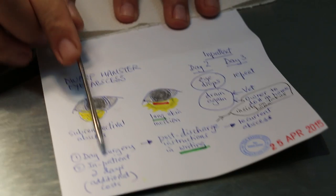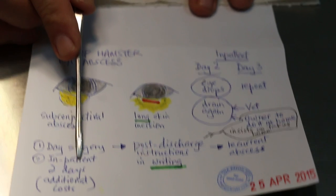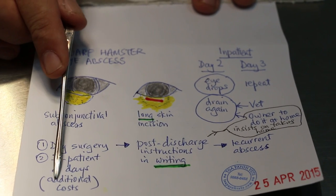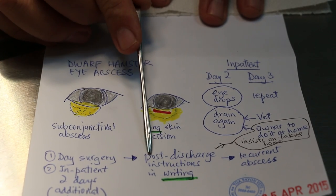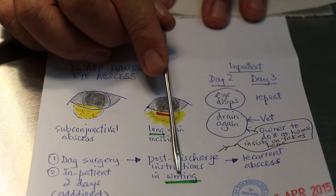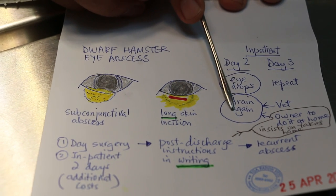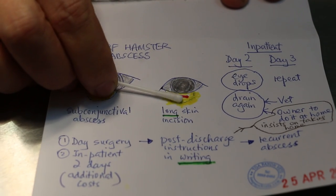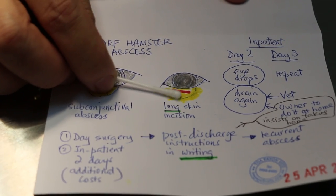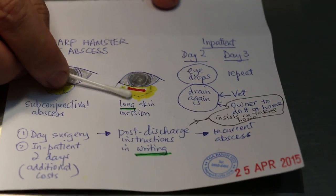I'm talking about two post-op scenarios: day surgery and inpatient. Inpatient for two days so that the vet can check and drain any more pus. These two days will of course be additional cost and some owners don't like it. For day surgery, as in this case, I did not put the post-discharge instruction in writing — meaning the owner must put eye drops and drain again. The owner uses a cotton bud to press onto the abscess to drain out any more pus, three times a day for two days, so that all remaining bacteria can be expressed out.